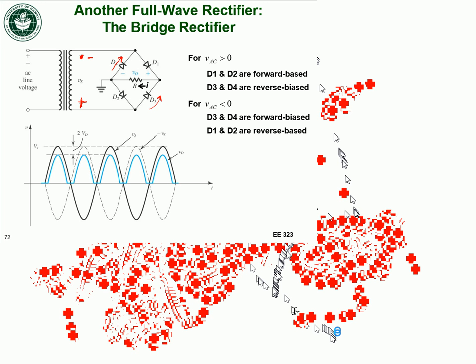At any given point in time, two of the diodes are forward biased and the other two are reverse biased. The difference between the source voltage and the voltage across the load resistor is now 1.4 volts, because at any given time I have two diodes conducting current — 0.7 volts drop per diode times two diodes gives 1.4 volts. My output voltage is 1.4 volts less than my input voltage.